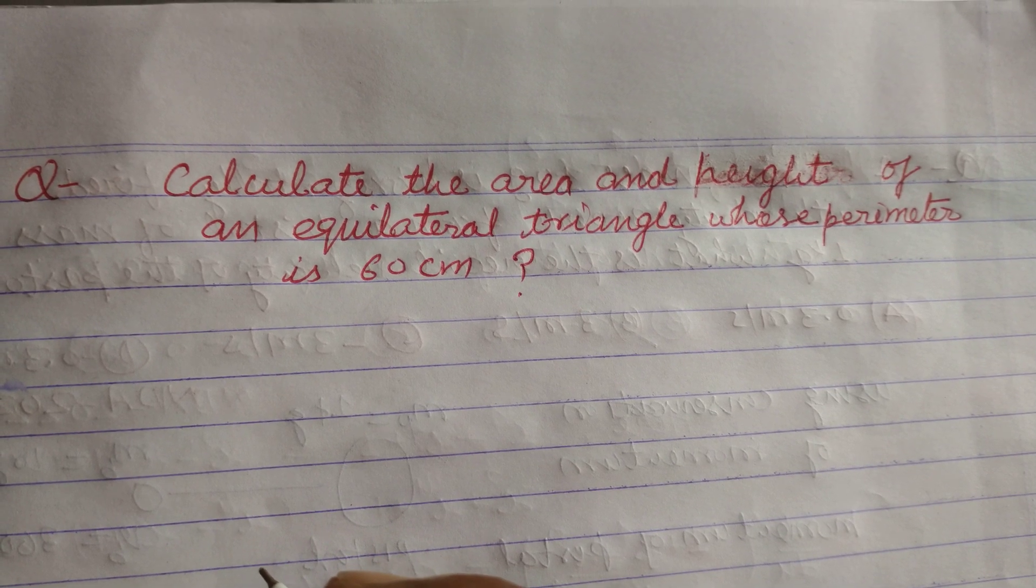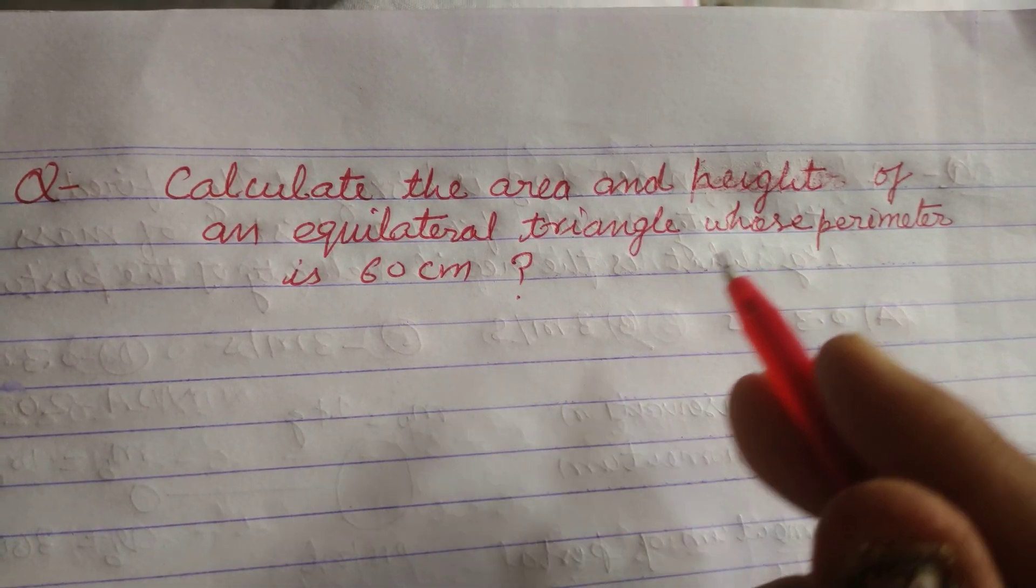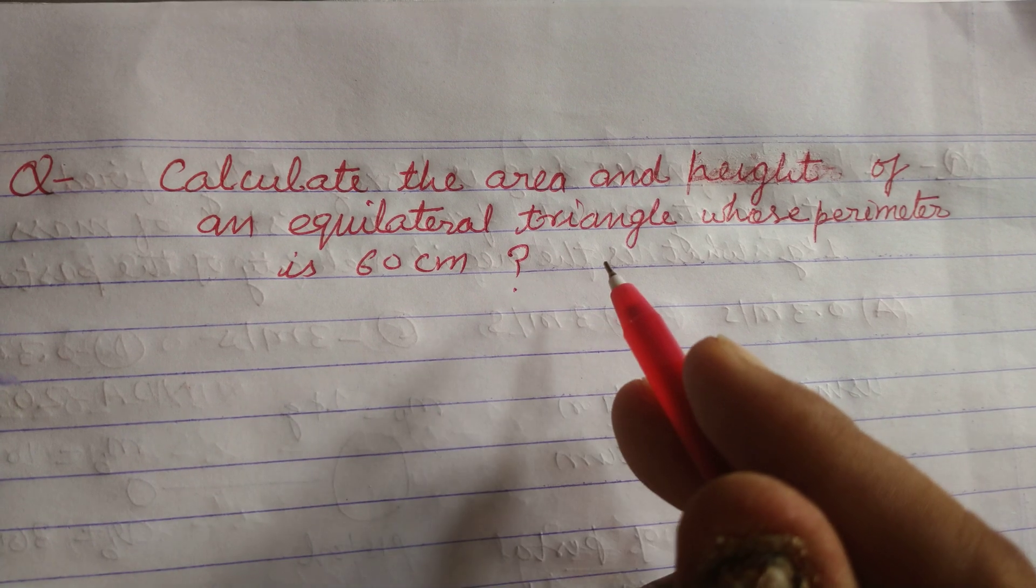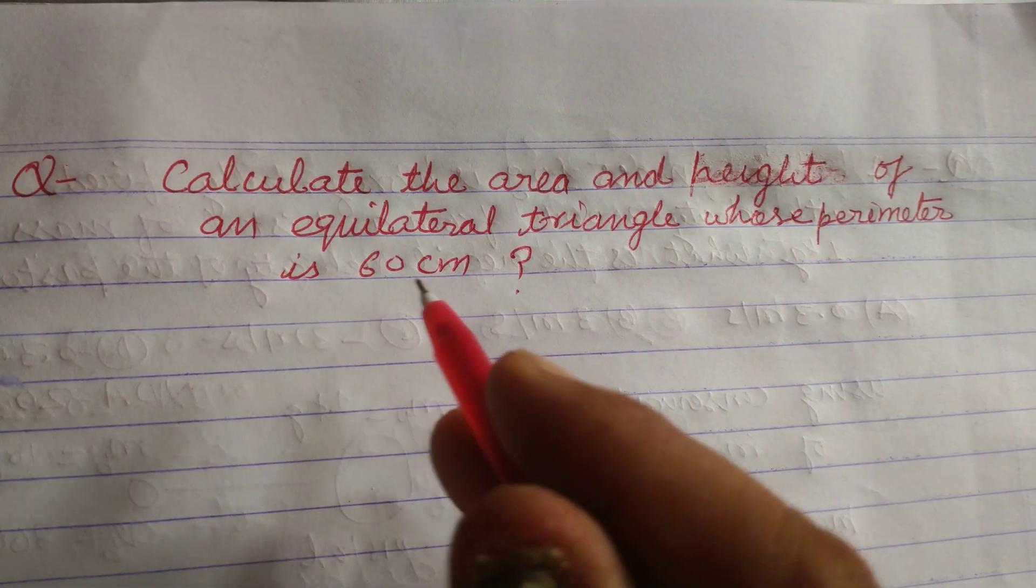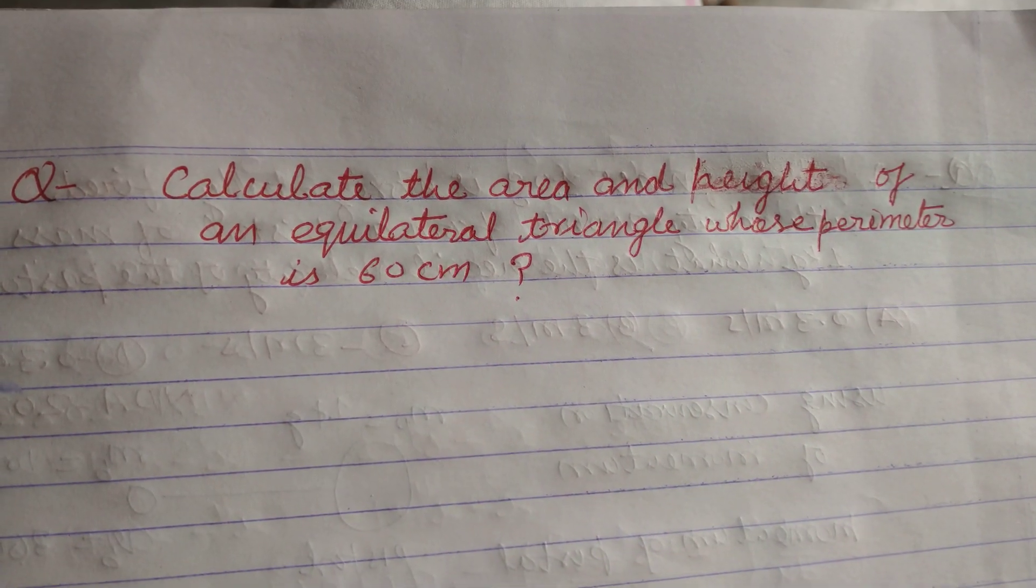Hello students, welcome to this YouTube channel. Calculate the area and height of an equilateral triangle whose perimeter is 60 cm.